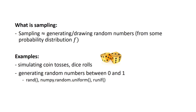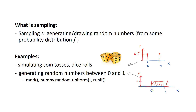Another example could be simulating coin tosses, which basically means sampling from a Bernoulli distribution, or dice rolls — very simple idea. Another case could be generating random numbers between 0 and 1, which in the language of probability means sampling from a uniform distribution.